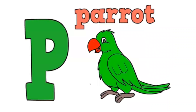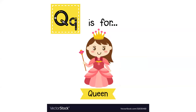P — P is for parrot, P is for parrot. Q — can you guess what's this? Correct! Q is for queen.